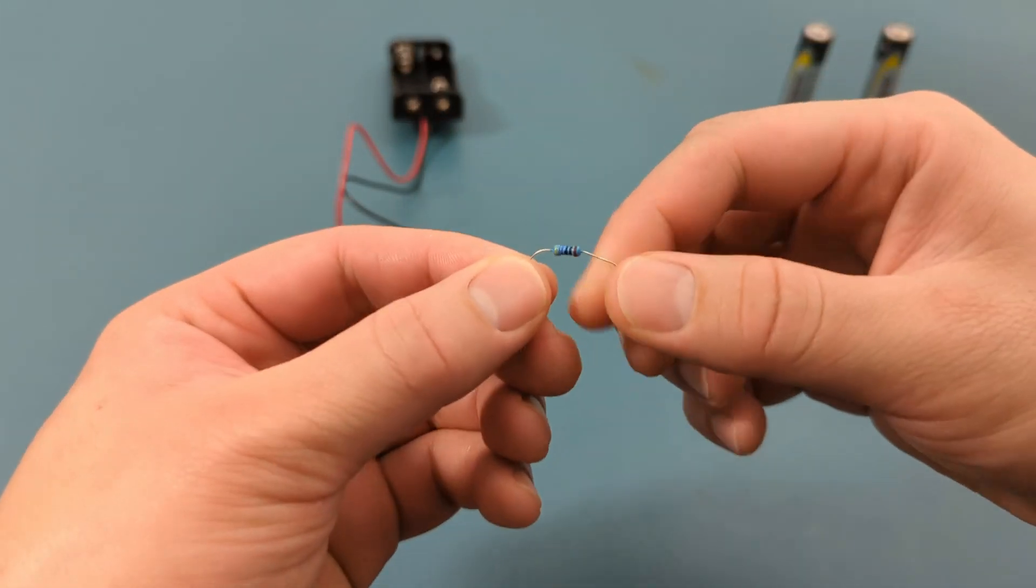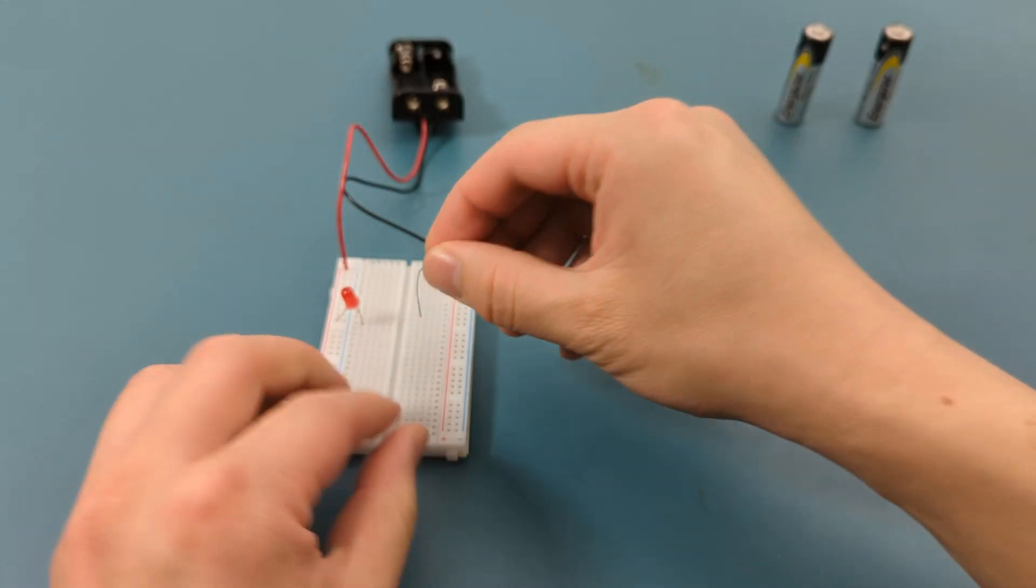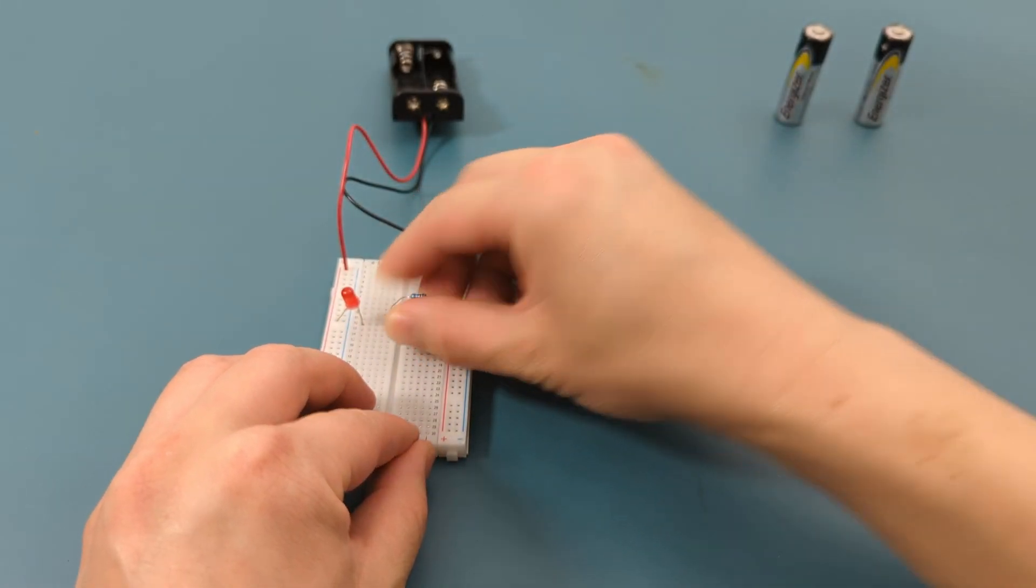Now, plug one end of a resistor into that same row, and the other end into the blue power rail or the negative terminal.